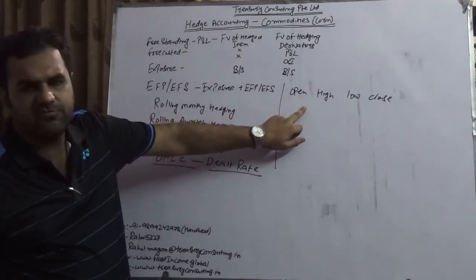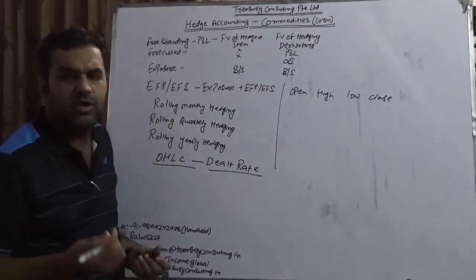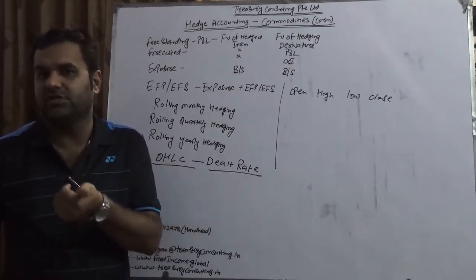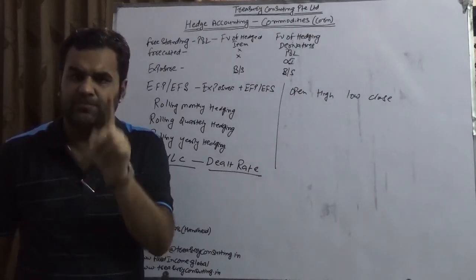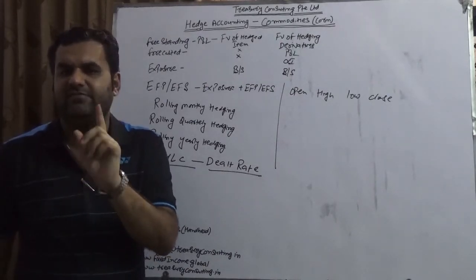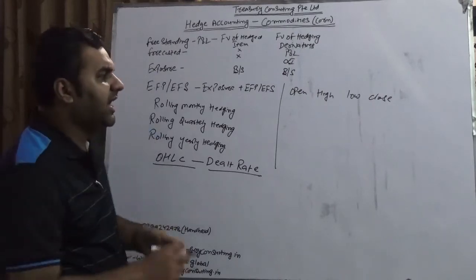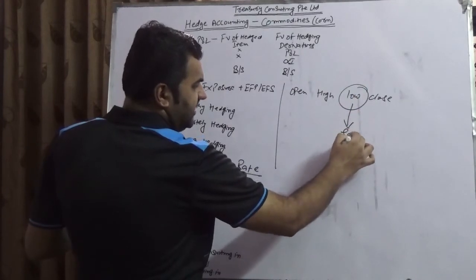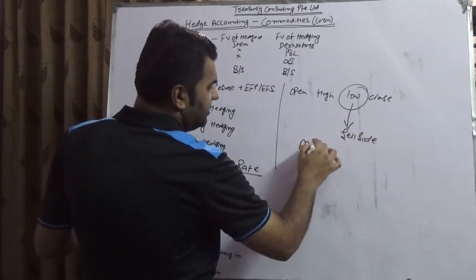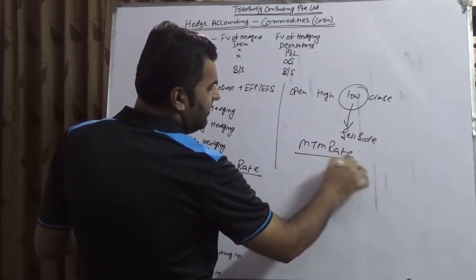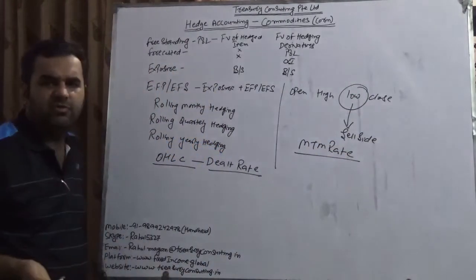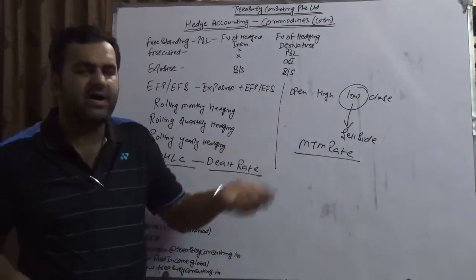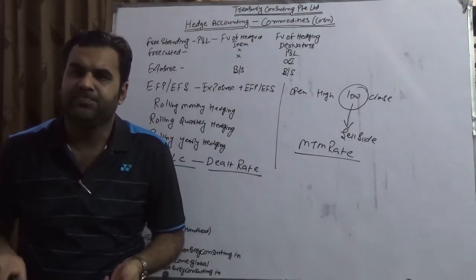We need to appreciate one fact: the Treasury Department should understand whether you are on the buy side or the sell side, and act accordingly. The dealt rate is critical — a majority of ineffectiveness comes because of the dealt rate. For example, companies that are on the sell side, once they get the mark-to-market rate, would always be ineffective if they dealt at a low rate while the market is on the high side.